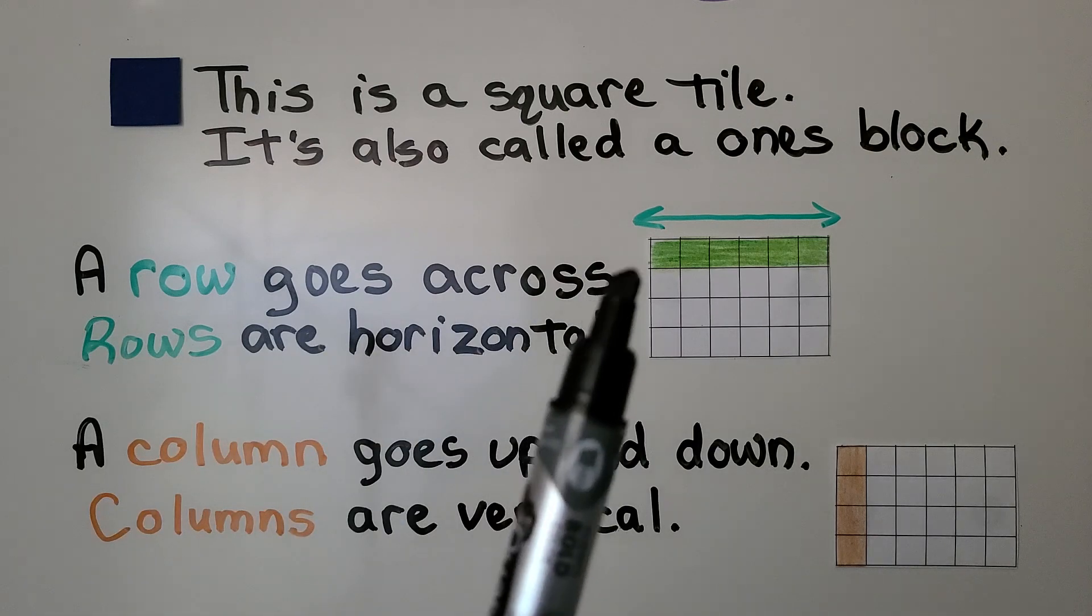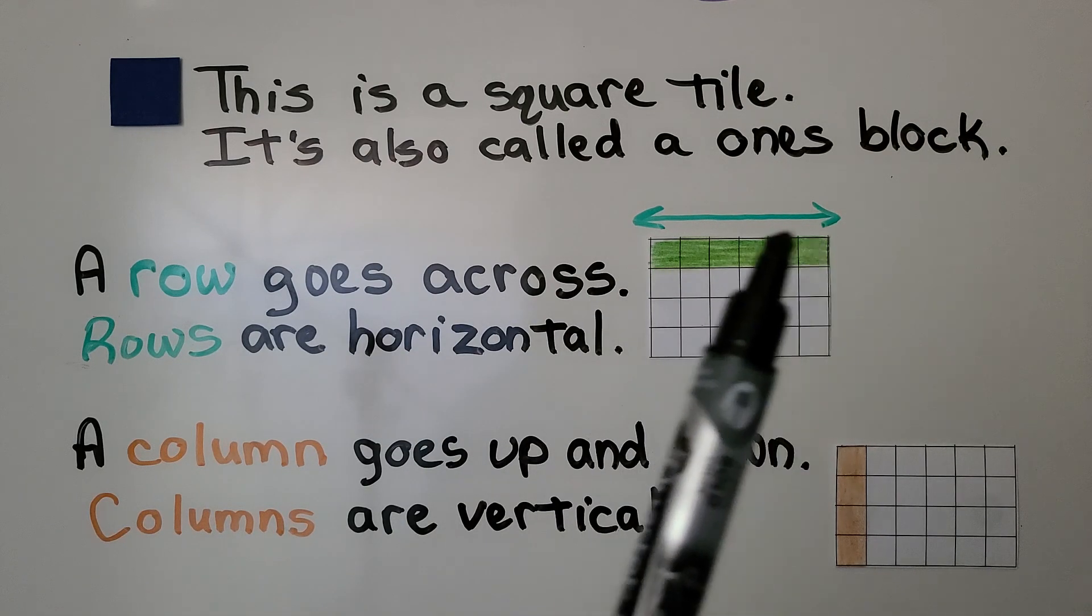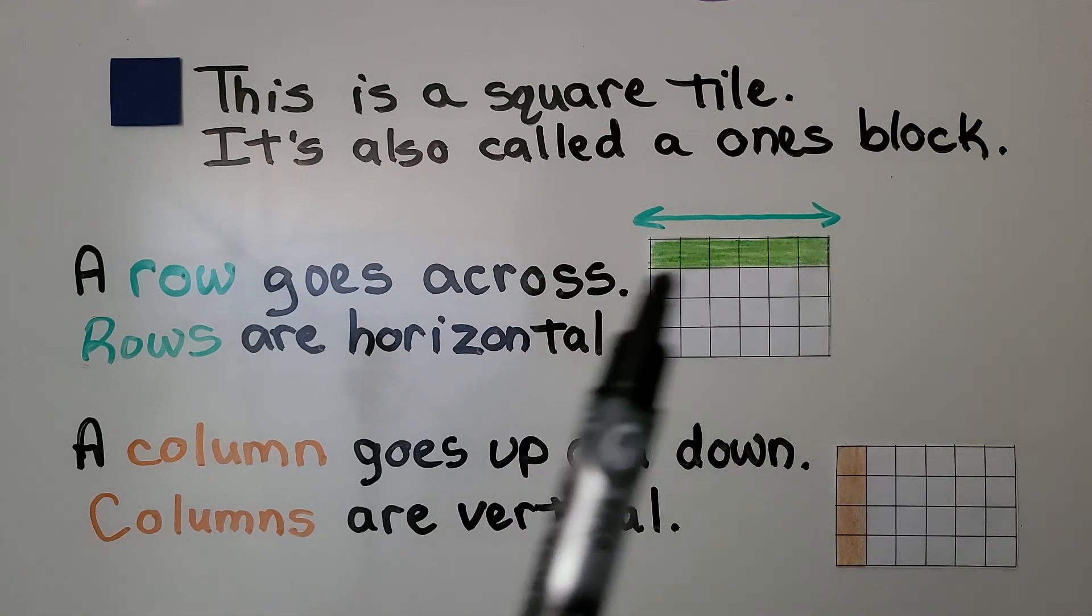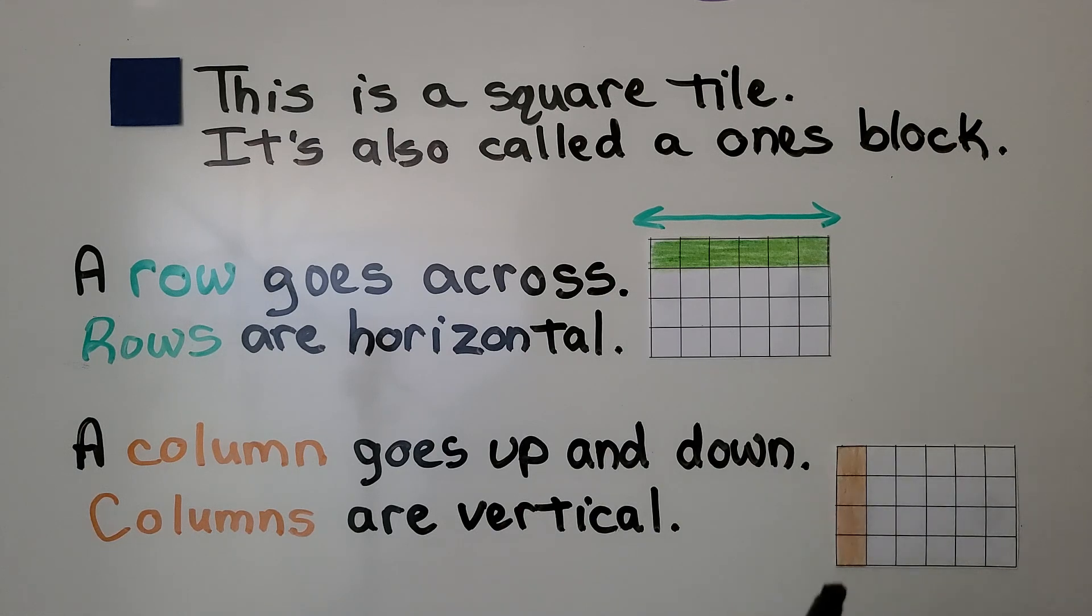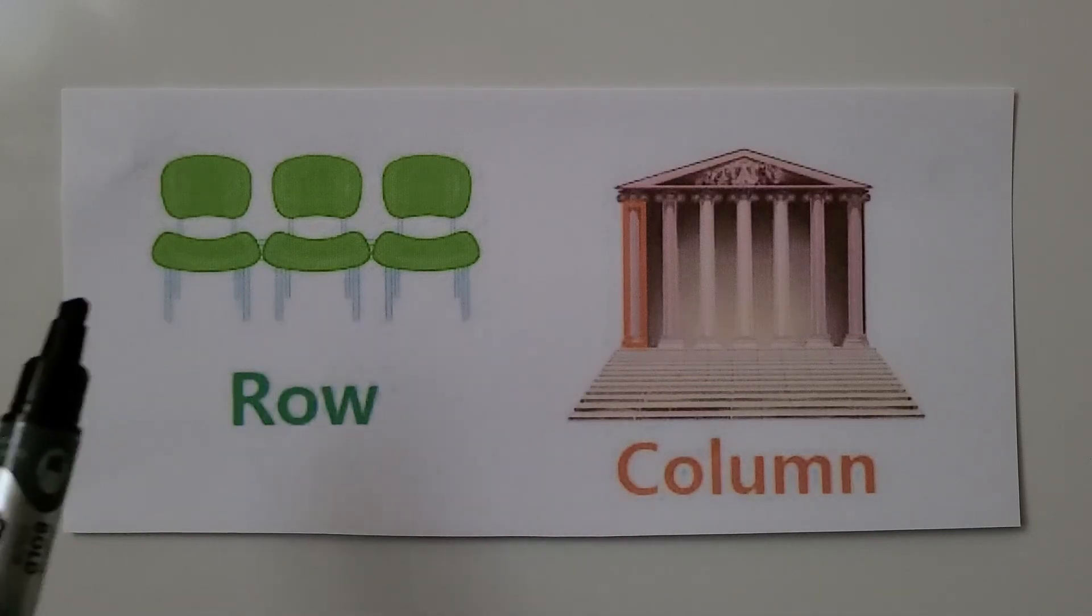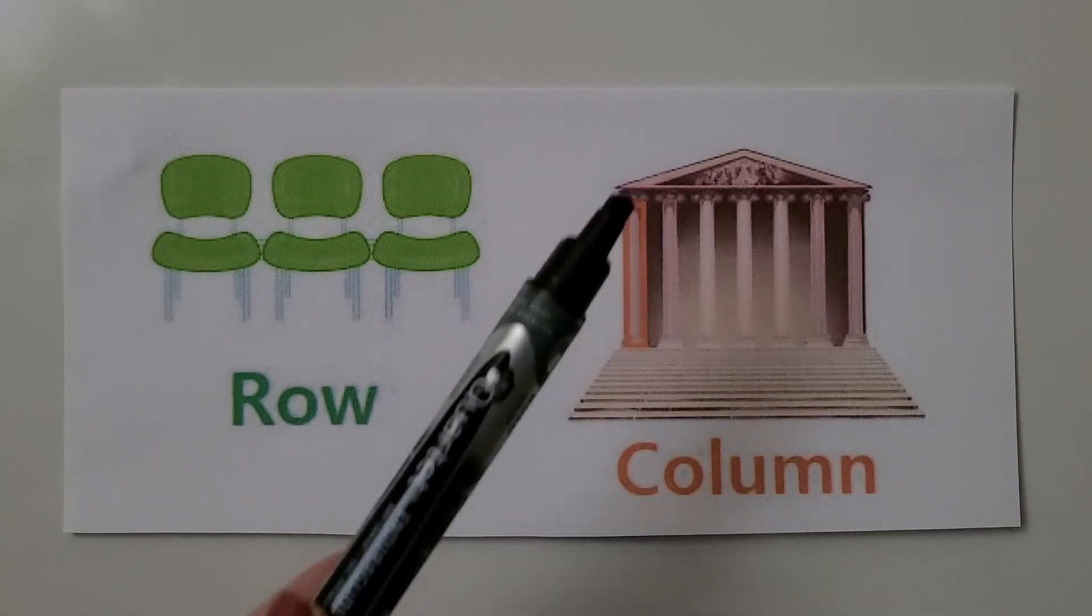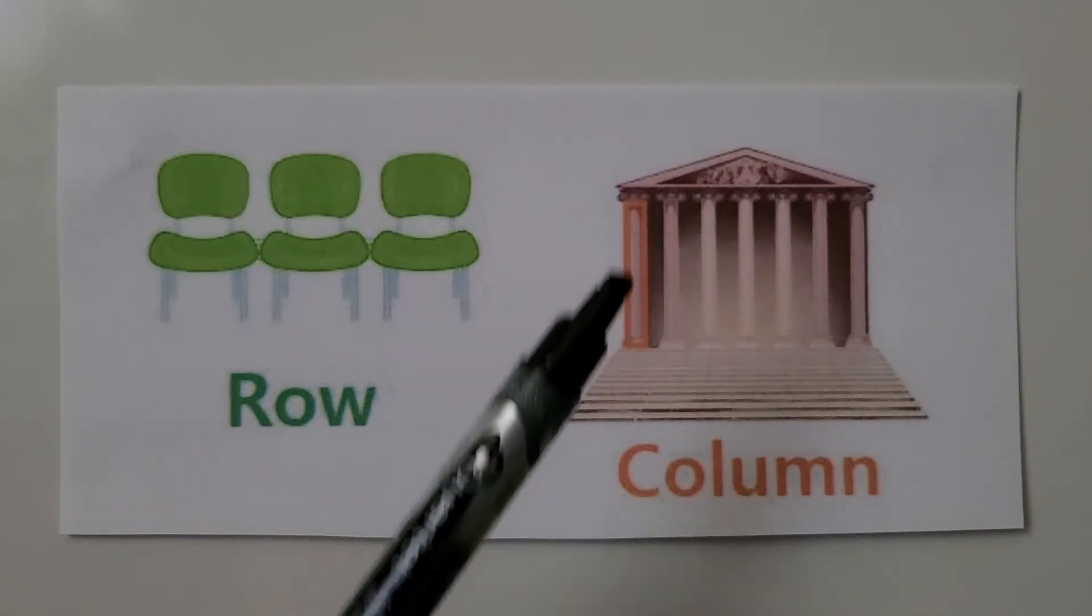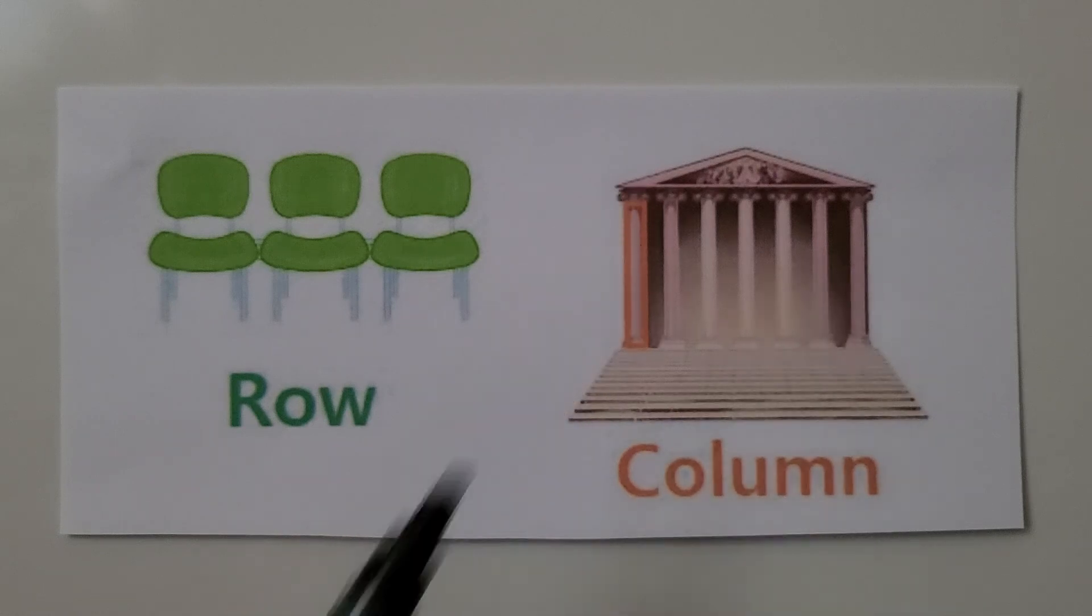A row goes across. Rows are horizontal. A column goes up and down. Columns are vertical. A row goes across like a row of seats. A column is going up and down like the column of a building holding up the roof.